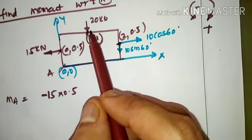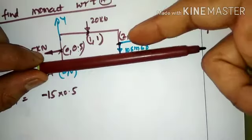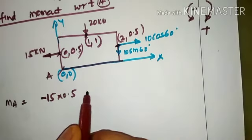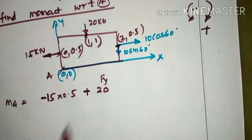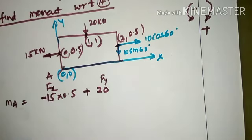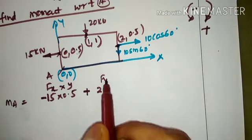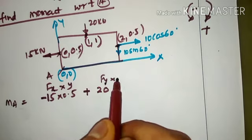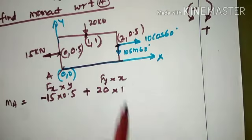The 20 kN downward force at the top fiber rotates clockwise with respect to A, so it is positive: +20 × 1. Note that 20 kN is a force parallel to y, so we multiply the x-coordinate, which is 1.